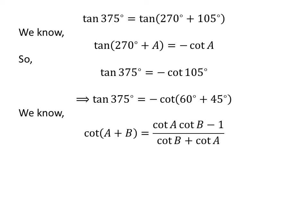We know the trigonometry identity: cotangent of A plus B is equal to cotangent of A times cotangent of B minus 1, upon cotangent of B plus cotangent of A. The proof of this identity is explained in the video in the upper right corner, and the link is also given in the description section.